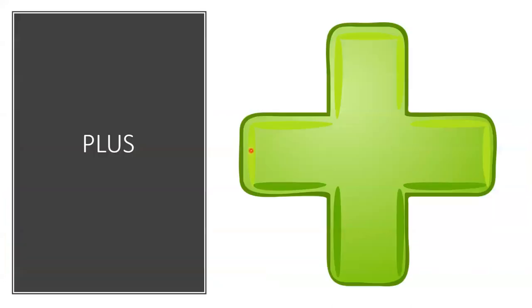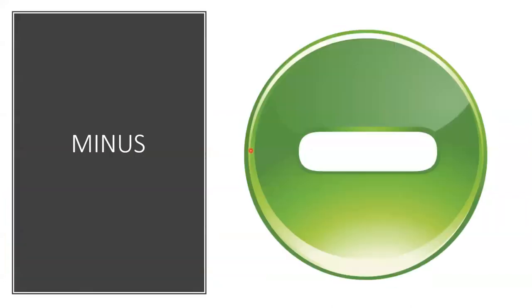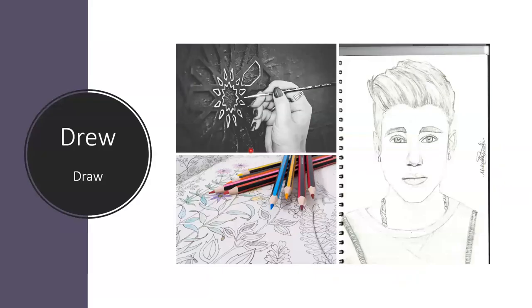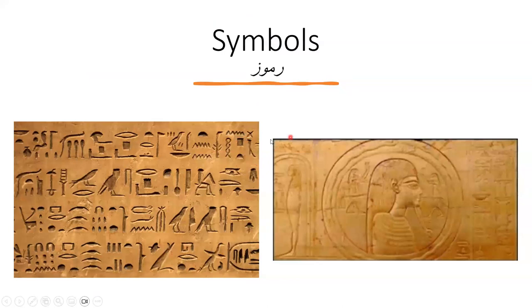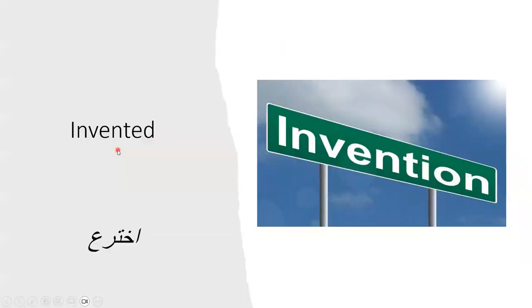Indian. Plus. Minus. 'Drew' — I can draw this picture. Drew is the past of 'draw.' 'Built' — this is the past of the verb 'build.' 'Symbols' — they are symbols on the wall of the cave. 'Invented' — invented comes from the noun 'invention.'